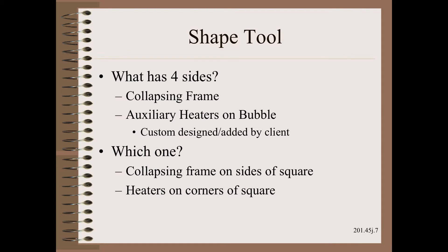Applying our trusty shape tool, we note that the shape of the problem must resemble the shape of the cause. Thus, the root cause must be four-sided. Two potential candidates came to mind that might have four sides — that is, the corners of the two collapsing frames and the four custom auxiliary heaters that the client requested. We will test both.